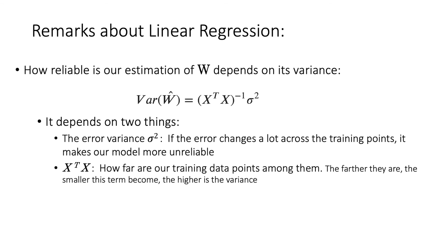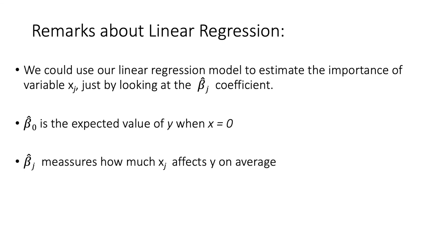On the other side, if training points are really nearby, we have more information in that area and the model is more reliable there. Also, we can use linear regression to estimate the importance of variables — for variable j, we just look at the beta j coefficient. If it's high, that variable is very important for the prediction. Beta 0 is the expected value of y when x equals 0, the bias term. Beta j measures how much x_j affects y on average.